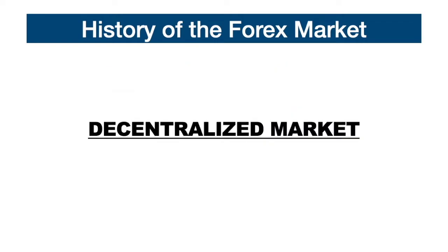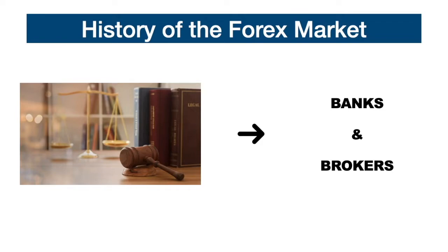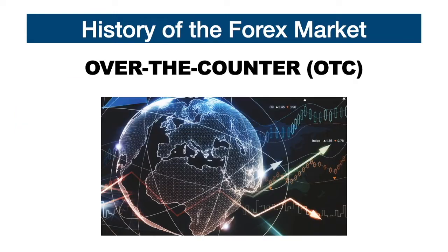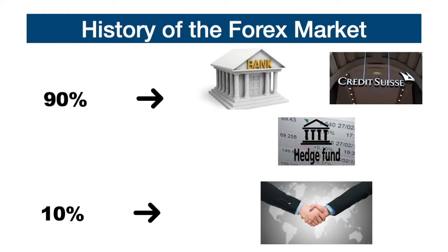The forex market doesn't have a physical headquarters or a central government body, and for this reason it is called a decentralized market. There are only government bodies which issue financial regulations and licenses to various financial intermediaries such as banks and brokers. Thanks to technological innovation, the forex market uses an over-the-counter system — an electronic banking system — which allows anyone anywhere in the world to invest in the forex market. Today 90% of transactions are exclusively generated by banks, investment companies, and large private speculators, while the remaining 10% is used for international trade.